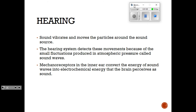These mechanoreceptors in your inner ear convert sound waves into electrochemical energy — it's not a nerve impulse yet, but it's going to be. Just like the photoreceptors in your eye take light and convert it into a nerve impulse, mechanoreceptors in your ear take the movement of particles from sound, convert that into electrochemical energy — nerve impulse action potentials — and then your brain will perceive it as sound.